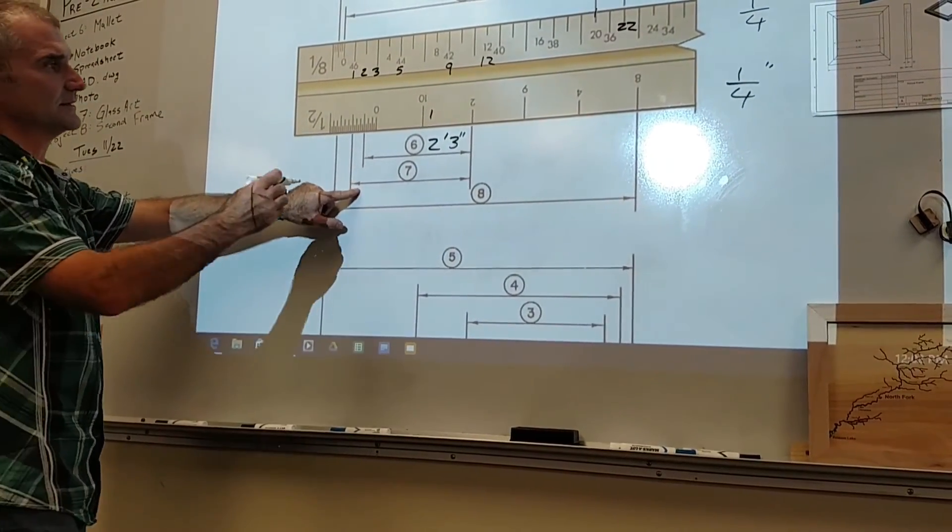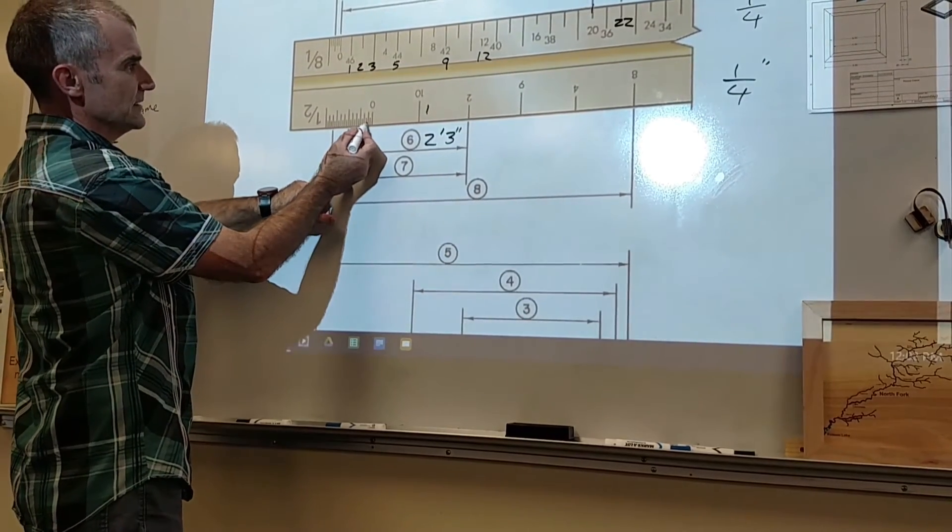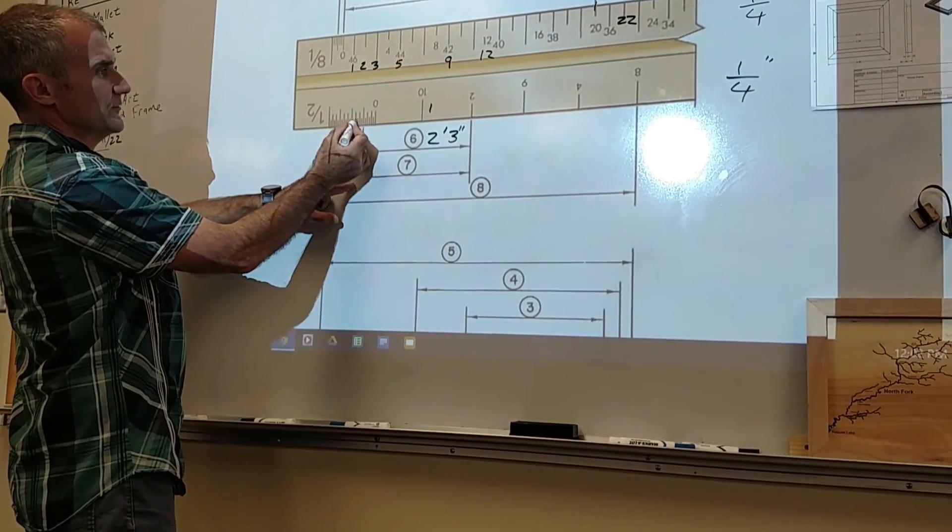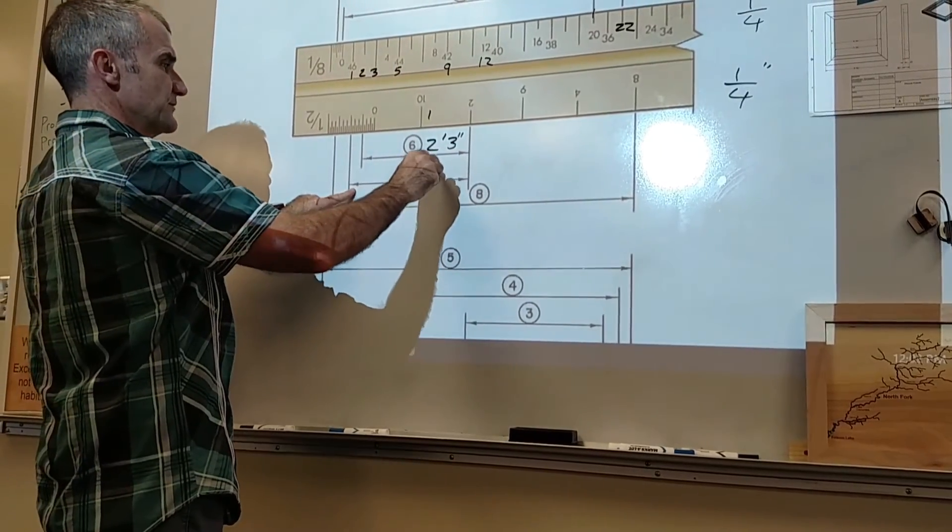Number seven, I'm still at two feet, but I'm at three, four, five, six inches. So number seven is two feet, six inches.